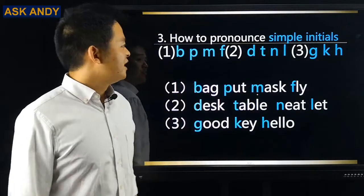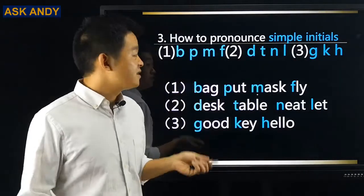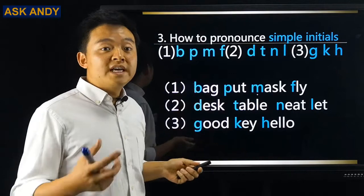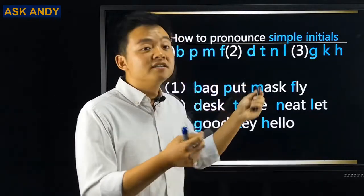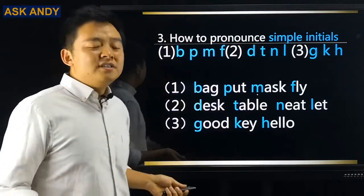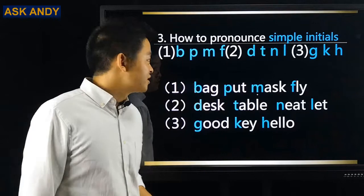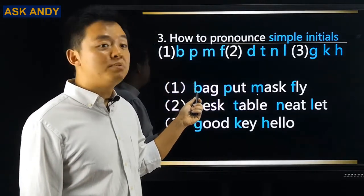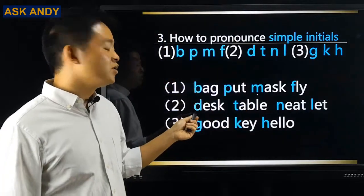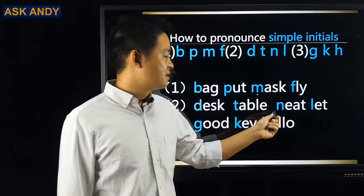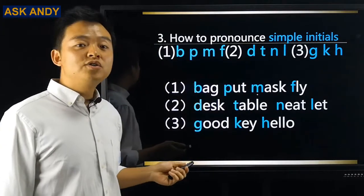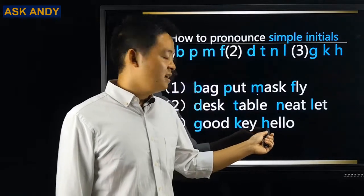Question number three: how to pronounce simple initials. I made them into three groups, and you'll always see them in three groups. Group one — we pronounce them with our lips: B as in 'bag,' P as in 'put,' M as in 'musk,' F as in 'fly.' Group two — we focus on the point of the tongue: D as in 'desk,' T as in 'table,' N as in 'need,' L as in 'let.' Group three — we pronounce with the root of the tongue: G as in 'good,' K as in 'key,' H as in 'hello.'